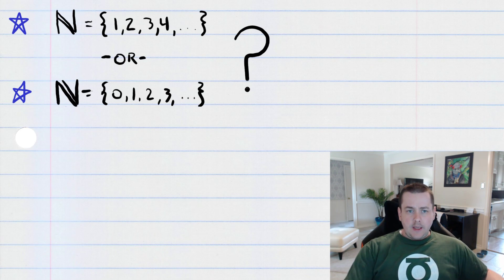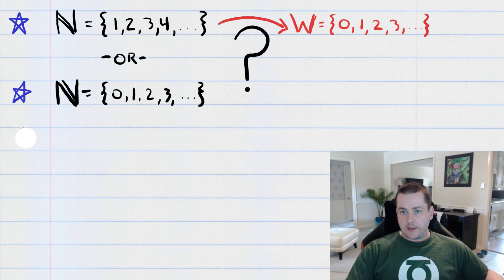Now, if you are used to the first definition, which I'm going to assume most of the people watching this video are, then your textbook will go on and define something called the set of whole numbers, sometimes denoted with a capital W.